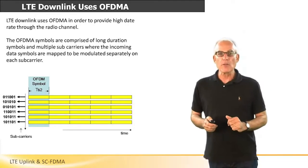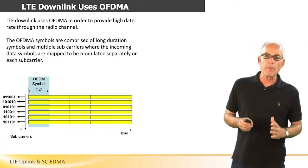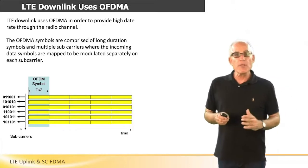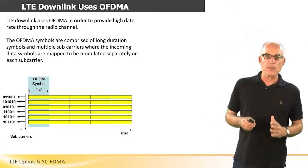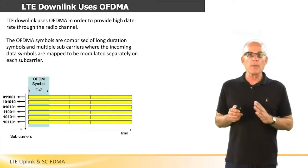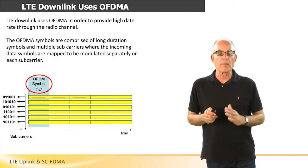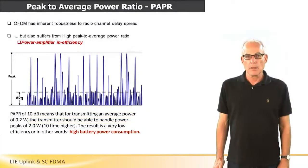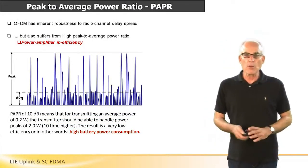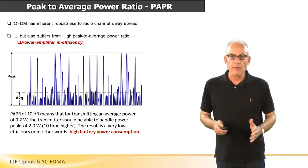LTE downlink uses OFDMA in order to cope with multipath, delay spread, and inter-symbol interference. The OFDMA symbols are made of long duration symbols and multiple subcarriers, where the incoming data symbols are mapped to be modulated separately on each subcarrier. OFDM is indeed very robust in terms of delay spread and inter-symbol interference — this is a significant advantage.